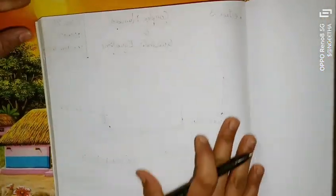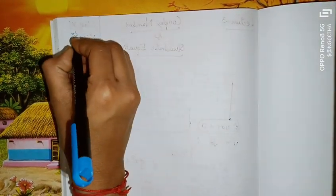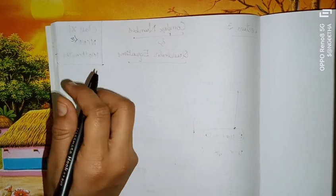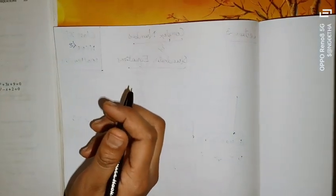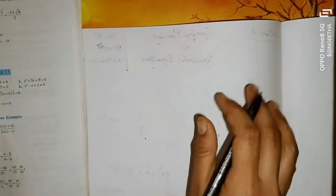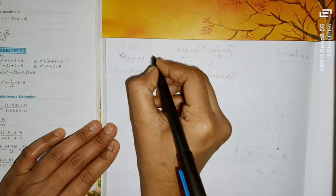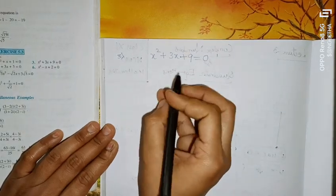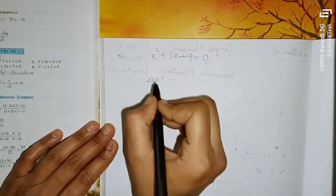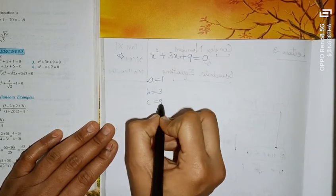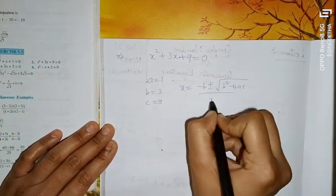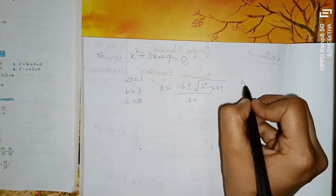Third question: x² + 3x + 9 = 0. Comparing with ax² + bx + c = 0, we get a = 1, b = 3, c = 9. Apply the formula x = (−b ± √(b² − 4ac)) / 2a and find b² − 4ac separately.